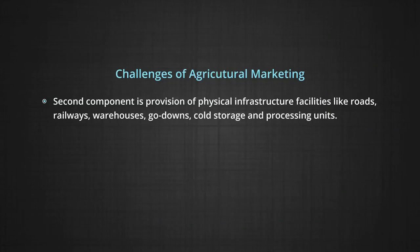The second component is provision of physical infrastructure facilities like roads, railways, warehouses, godowns, cold storage, and processing units. The current infrastructure facilities are quite inadequate to meet the growing demand and need to be improved.